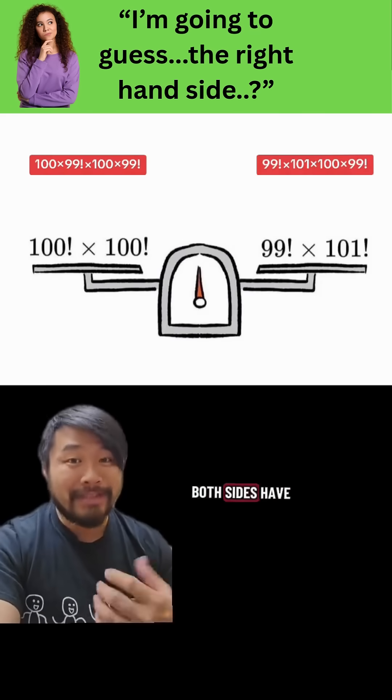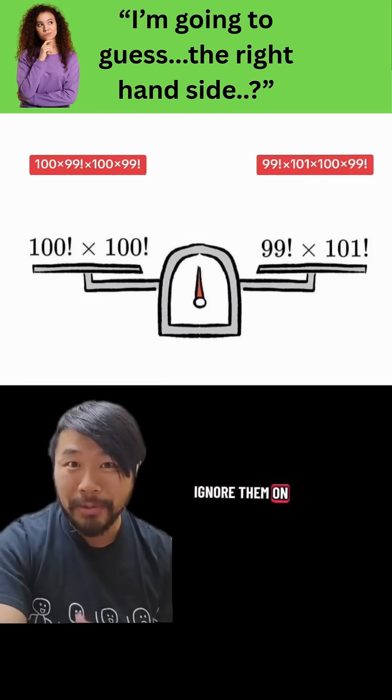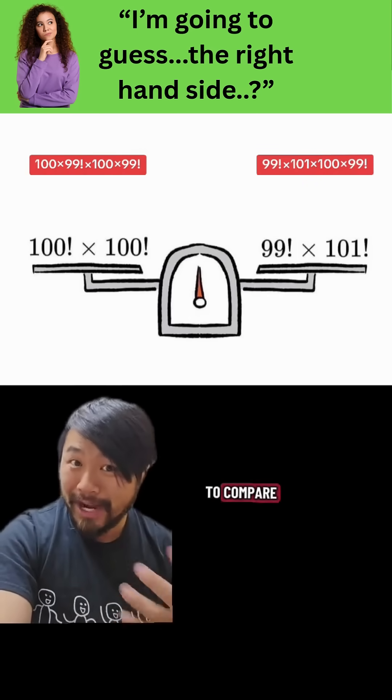Now notice that both sides have 99 factorial times 99 factorial, so we can ignore them on both sides. So what's left to compare?